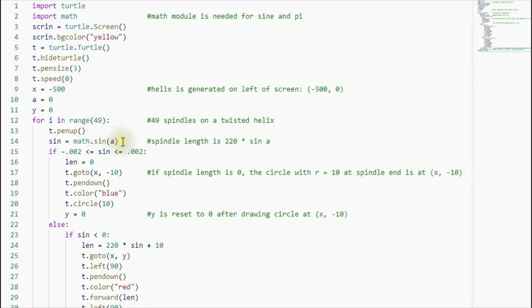Now I am using the length of the spindle, the 220 times sine of the angle here. So just in case the angle is zero, so sine is zero, that means the length of the spindle for the angle corresponding to zero is zero, there is no spindle length.